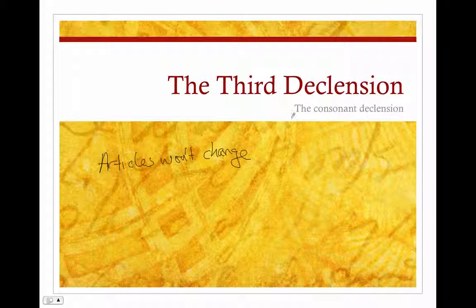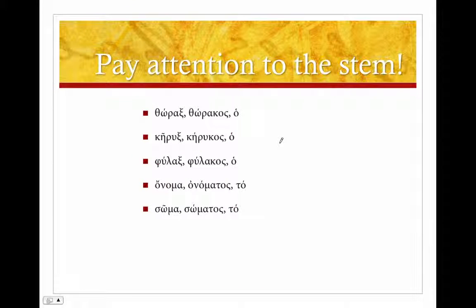Now the third declension is oftentimes referred to as the consonant declension because most of the third declension nouns, the stem ends in consonants. So we want to pay attention to that stem. There are going to be some spelling changes that will occur because of that consonant stem.